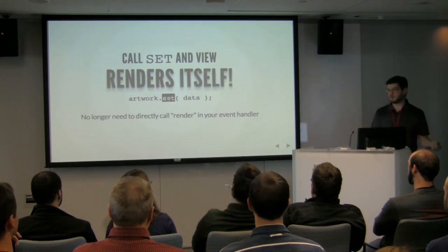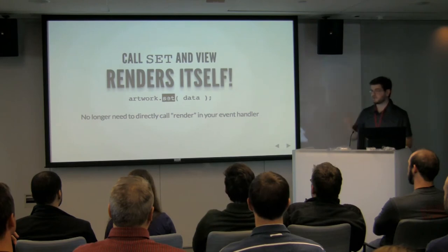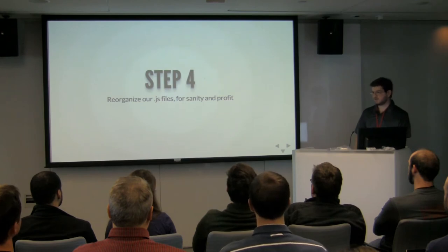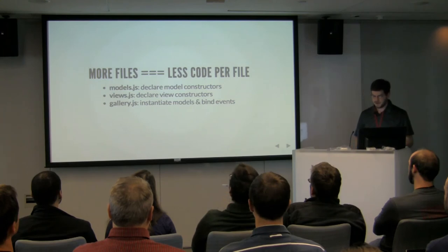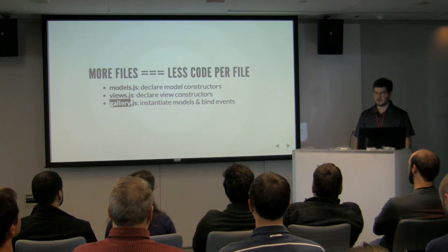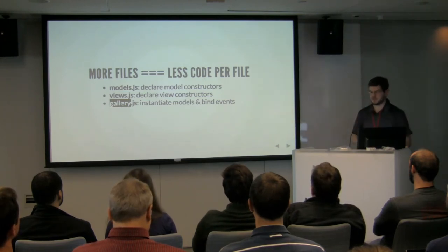Linking these together in our main app becomes very easy. We create an artwork model, we create a featured artwork view that knows about that model, and then every time we do artwork.set(), the view is going to re-render itself. We no longer have to worry about asking that part of our page to render in our event handler. We can simply say: when the user clicks on this, figure out what they wanted, and set it. We're then going to take our files and split them up — models into a models.js file, views into another file, and then a small application file that puts the constructors together on the page.